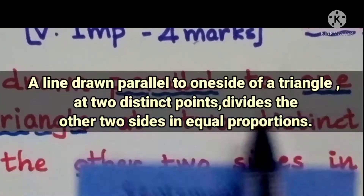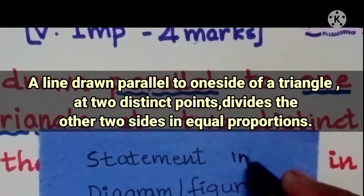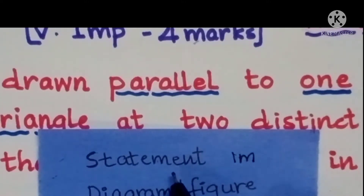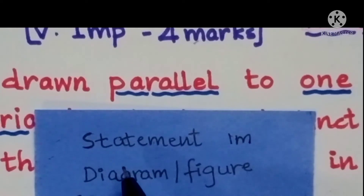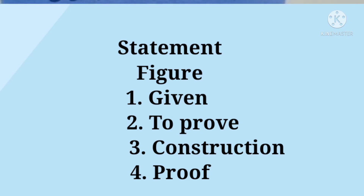If they ask you only to write the statement, they will say 'state Thales theorem' — that means you write only the statement, usually asked for one mark. But if they ask 'state and proof Thales theorem,' then you have to write the statement, draw the related diagram, and follow the four steps. The four steps are: given, to prove, construction, and proof.